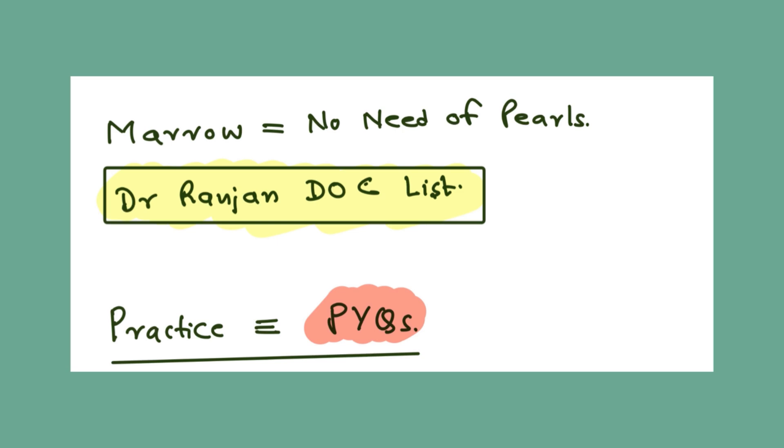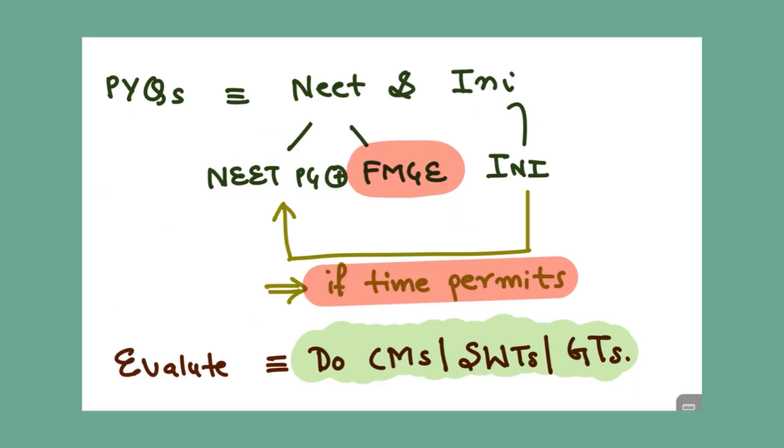Regarding marrow, no need to do the pulse section of marrow. And also Dr. Ranjan Kumar has made a list of drug of choices of various system in a very systematic manner that you can revise easily. I revised it multiple times before my entrance examination and that helped me a lot. I will be showing you that pdf in the last portion of my video.